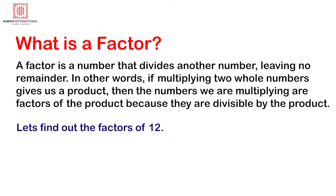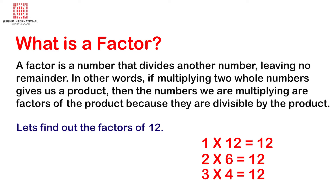Let's find out the factors of 12. To begin with, let's find the pairs of numbers that give 12. 1 × 12 = 12, 2 × 6 = 12, 3 × 4 = 12. We get 3 pairs of numbers that give us the product 12. No other pair of numbers when multiplied will give a product of 12.